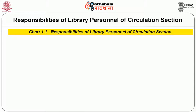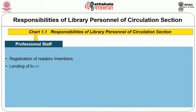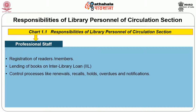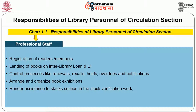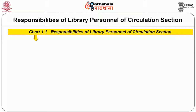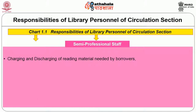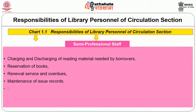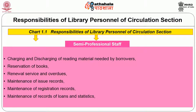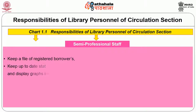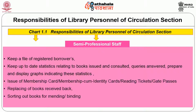The responsibilities of library personnel in the circulation section are divided among professional, semi-professional, and non-professional staff. The professional staff handles registration of readers, lending of books, controlled processes like renewals, recall and hold, overdue notifications, management of book exhibitions, and reader assistance in finding required material. The semi-professional staff handles charging and discharging of reading material, reservation of books, renewal service, overdue management, maintenance of issue and registration records, maintenance of loan records, keeping a file of registered borrowers, and maintaining up-to-date statistics.